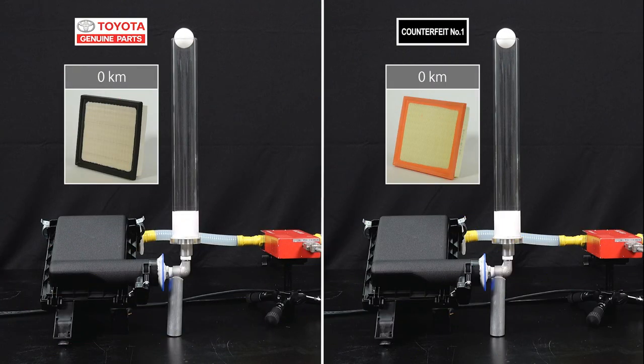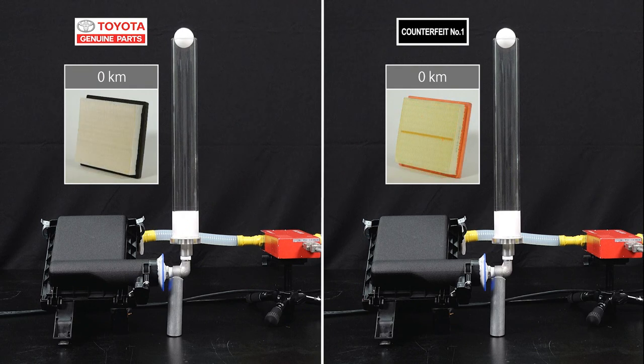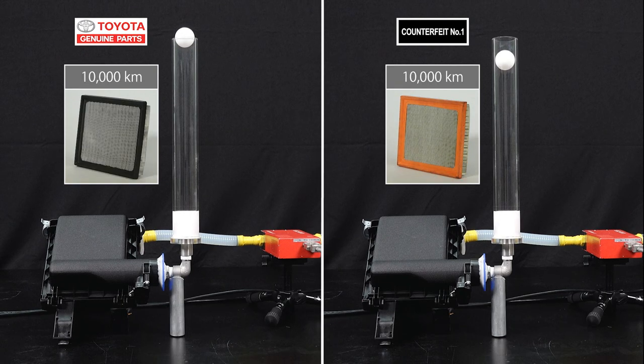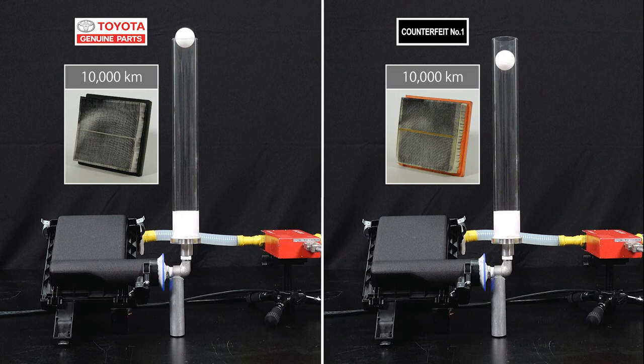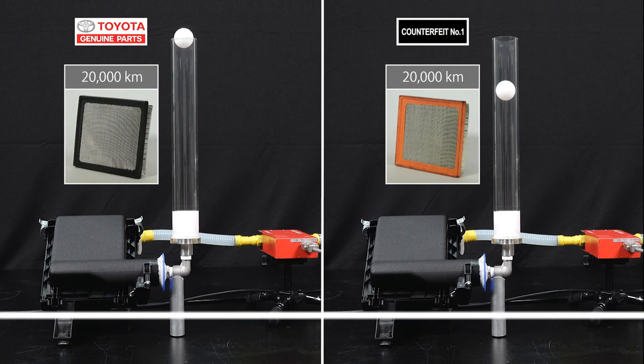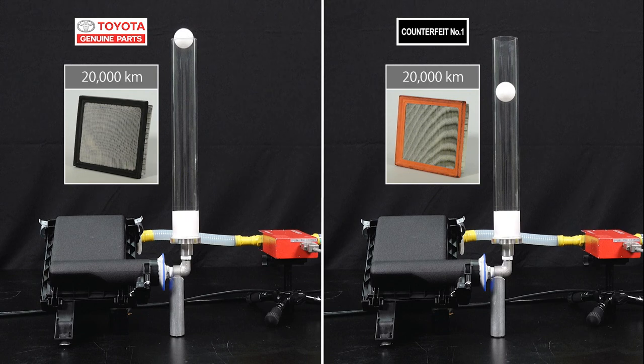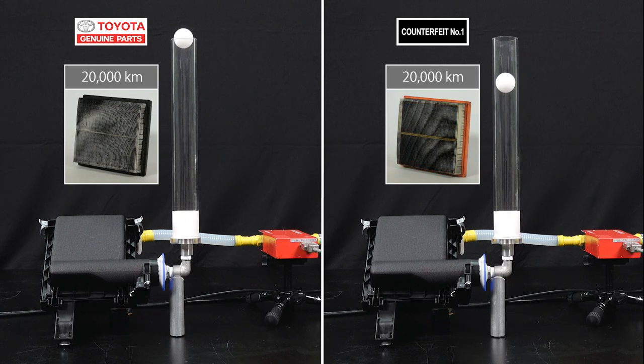When they're new, they're about the same. Alright, now we're going to compare them every 10,000 kilometers. Hmm, interesting. At 10,000 kilometers, the ball for the counterfeit air filter is already lower. At 20,000 kilometers, it's even lower. I wonder if it's starting to clog up.